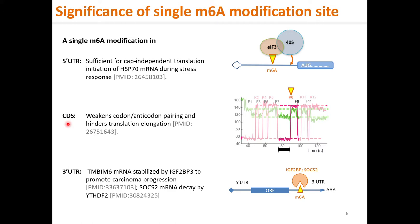A single M6A site in the coding sequence can slow down translation elongation and alter co-translational protein folding maturation. A single M6A site near the stop codon can lead to mRNA degradation and decay by YTHDF2 reader. A single M6A site in the 3'UTR can bind IGF2BP2 or SOX2 to stabilize the mRNA for increased protein production.